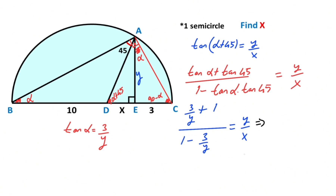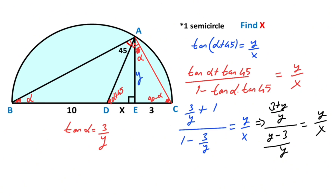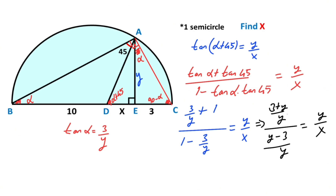If you simplify the numerator and denominator: (3 + y)/y over (y − 3)/y equals y over x. These y's cancel, so we get (3 + y) over (y − 3) equals y over x.